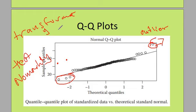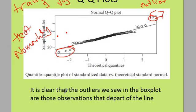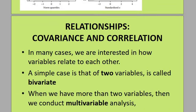Another way to deal with outliers is to transform the data — for example, taking the square root of the variable. You then compute those transformed values and check if the transformed data still violates your assumption. Outliers seen in a box plot are those observations that depart from the expected pattern.